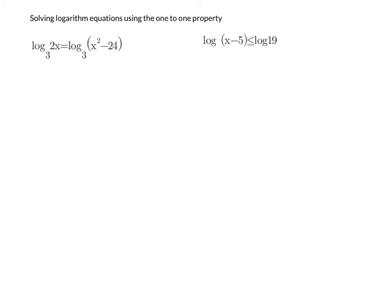Solving logarithm equations using the one-to-one property. The one-to-one property tells us that if we have log base 3 of something equal to log base 3 of something else, those somethings have to equal each other in order for the equation to be true.